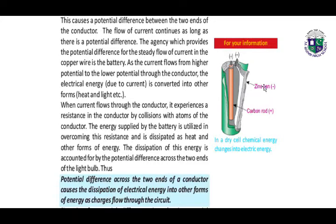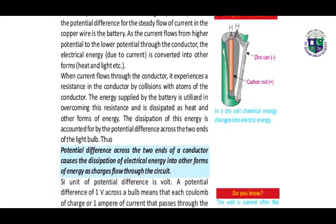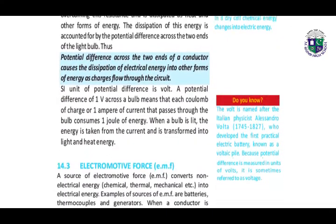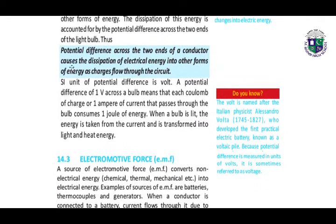Here we have the dry cell — chemical energy changes into electrical energy. This blue box shows the definition of potential difference: potential difference across the two ends of a conductor causes the dissipation of electrical energy into other forms of energy. As charges flow through the circuit, the SI unit of potential difference is volt.